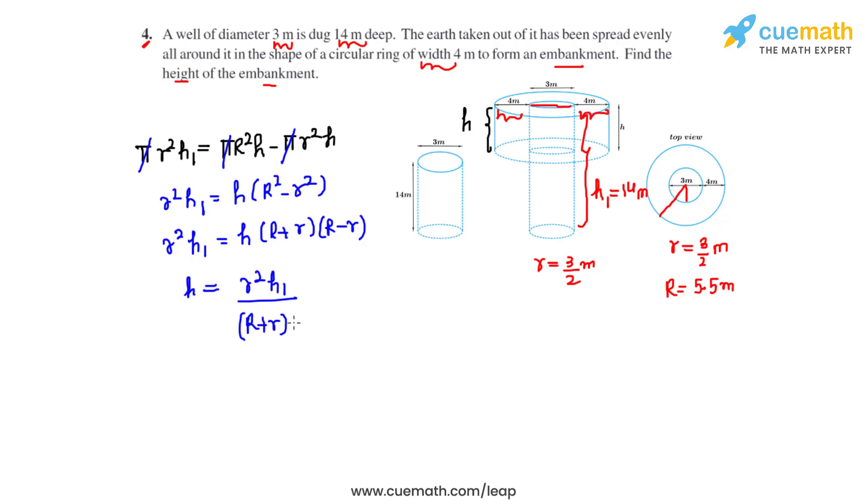Let's substitute the values. r² = (3/2)² times h₁ = 14. This whole is divided by (R + r)(R - r), so we get (3/2)² × 14 / [(5.5 + 1.5)(5.5 - 1.5)].